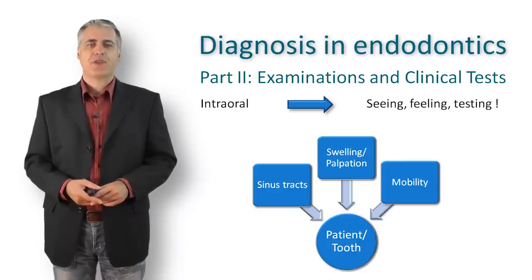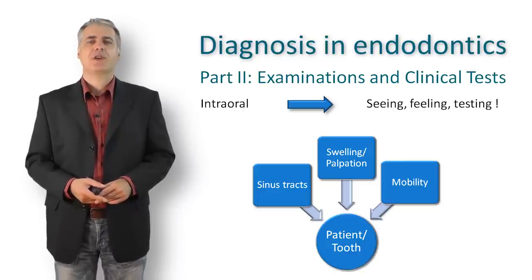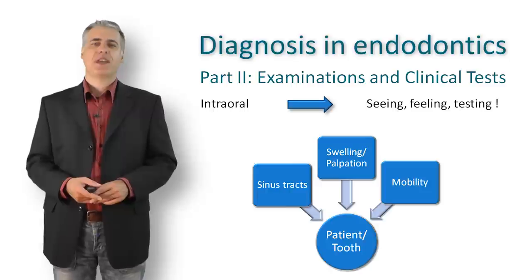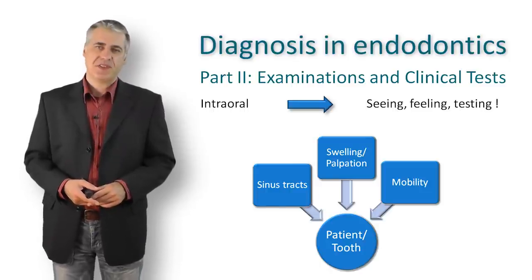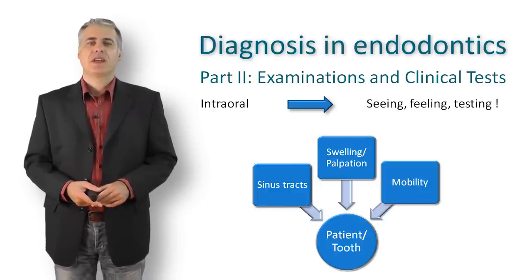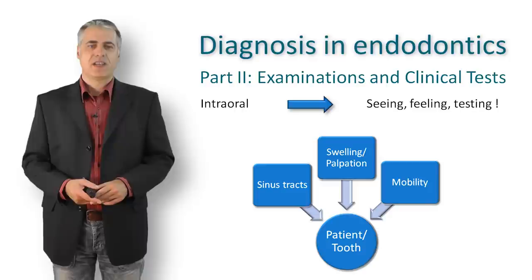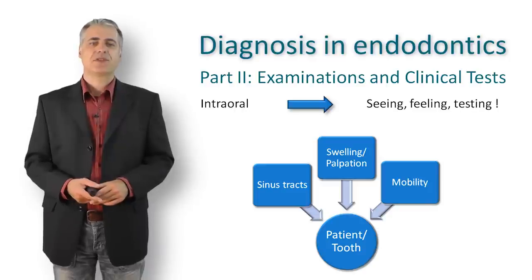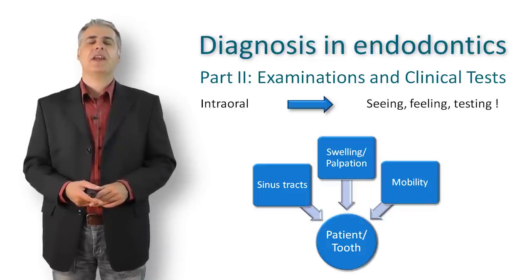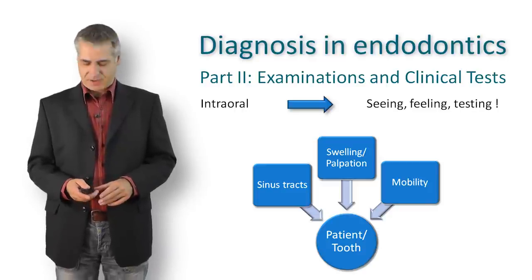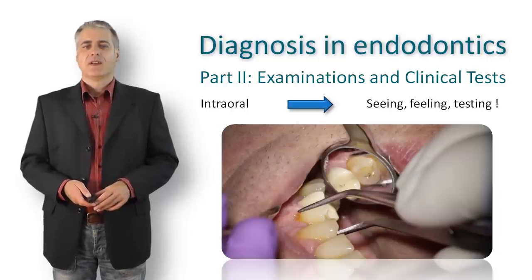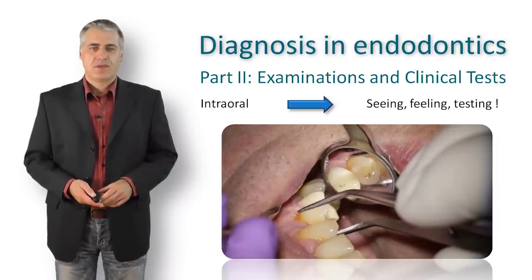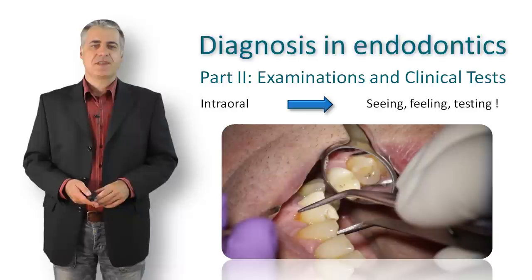The mobility of a tooth is a sign of a compromised periodontal attachment apparatus and can be caused by a range of reasons, starting with localized or generalized periodontal disease up to trauma, a habit, or an endodontic infection. Knowledge of the dental history is crucial to interpret these findings correctly.